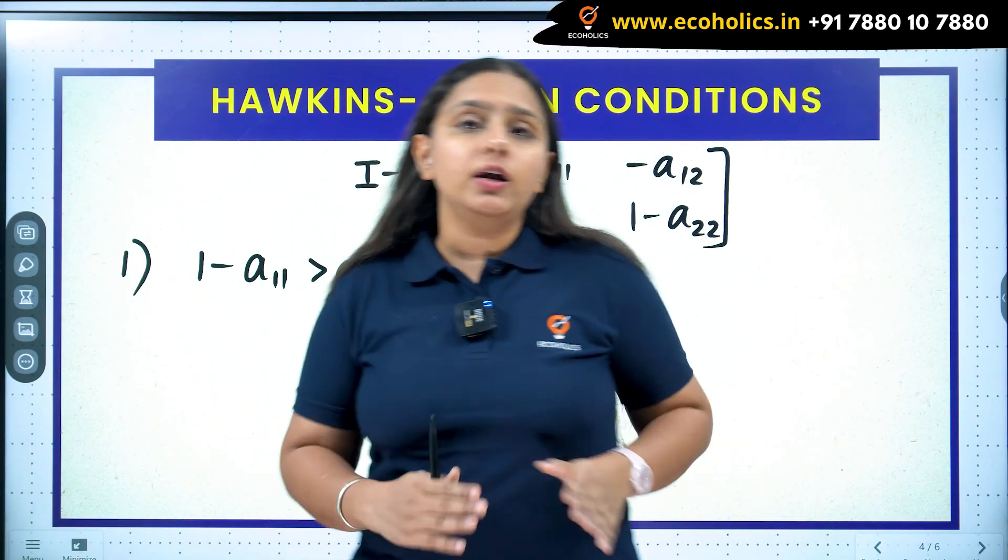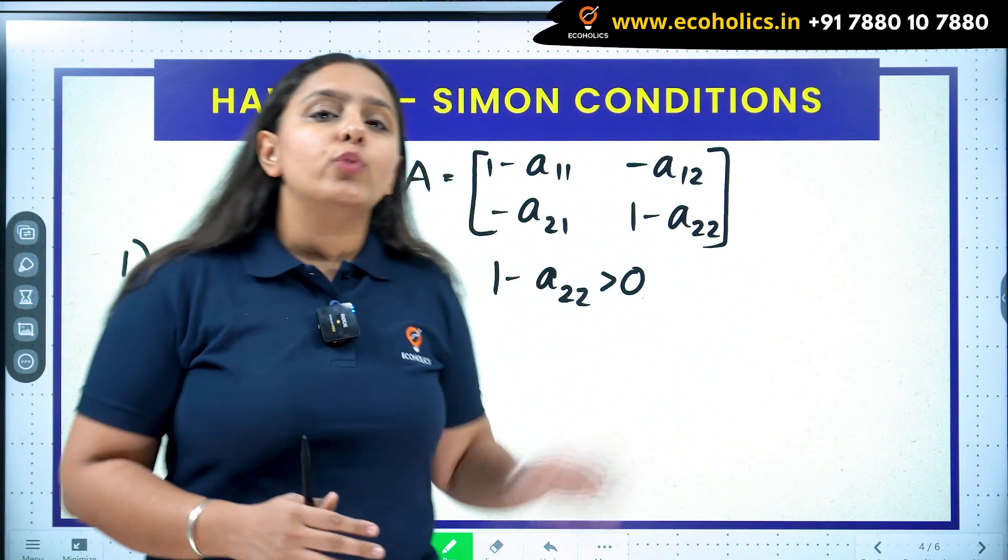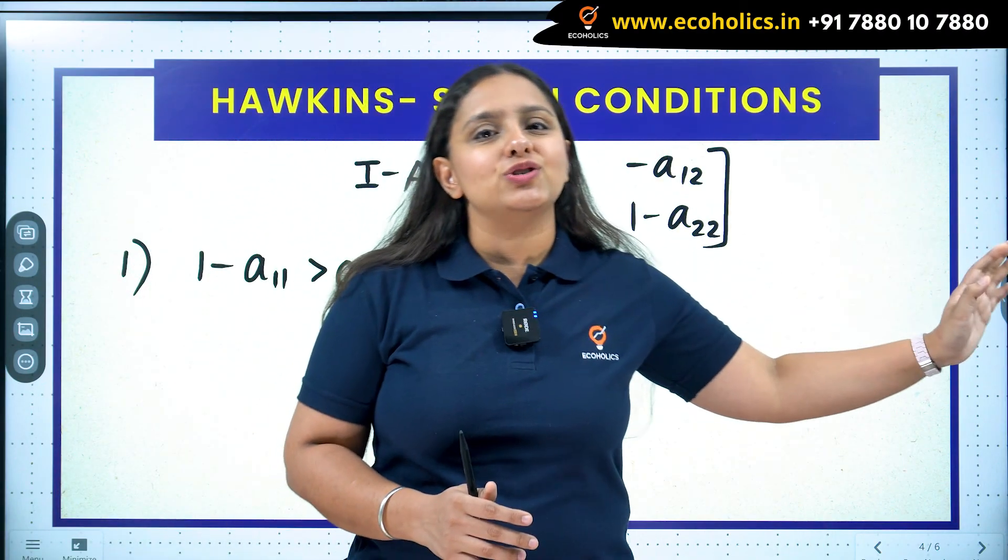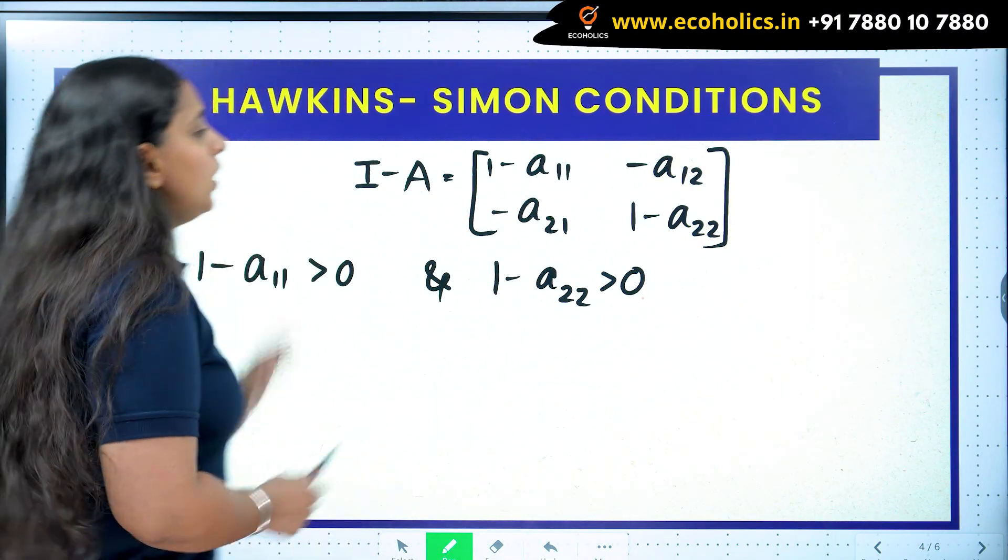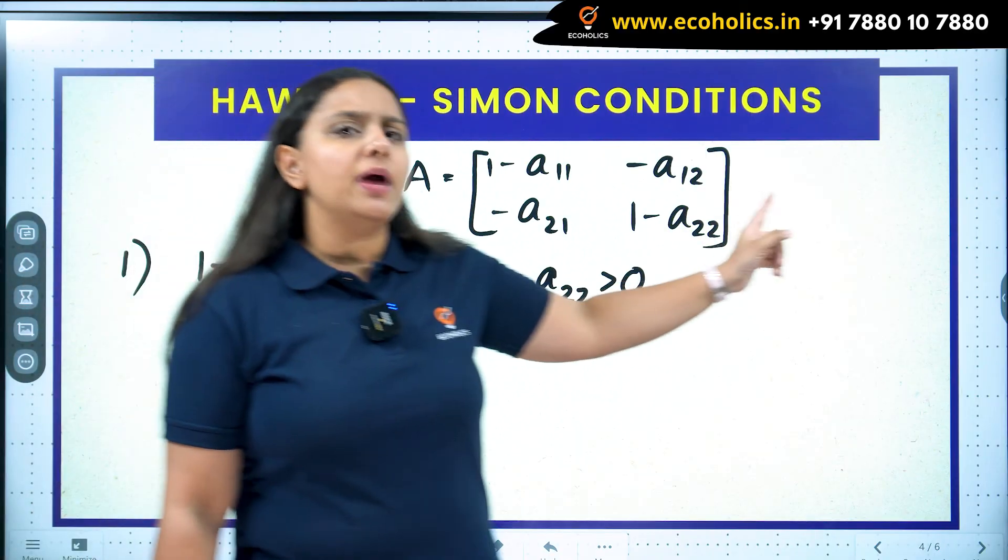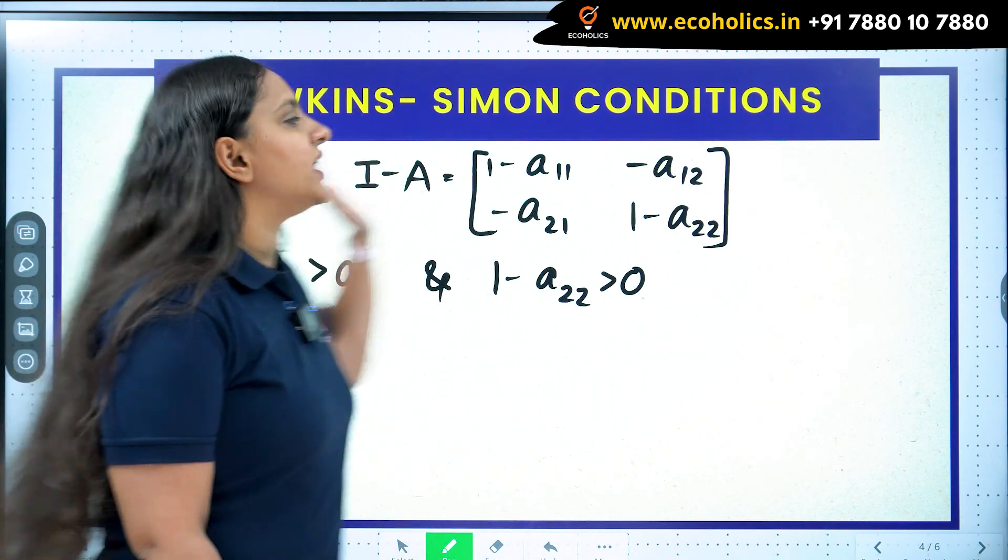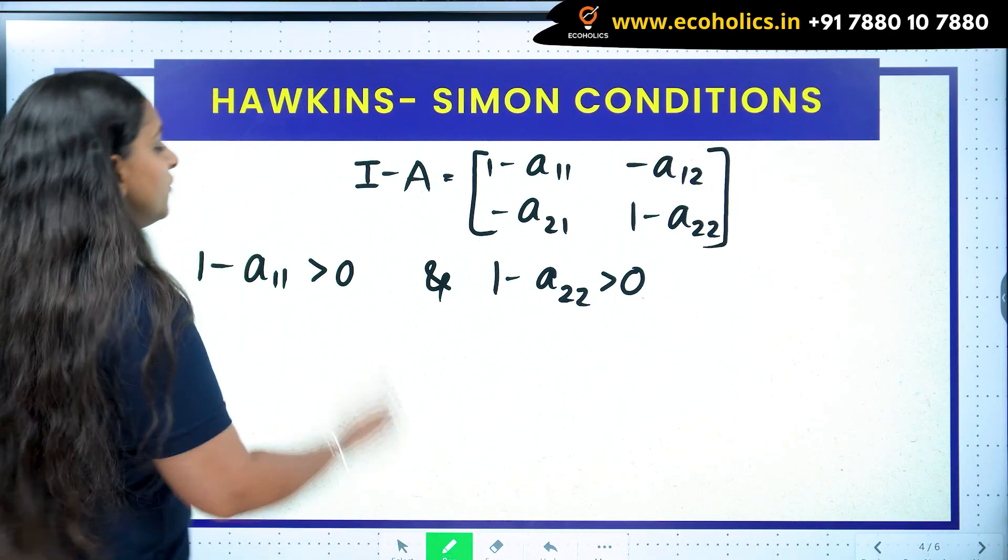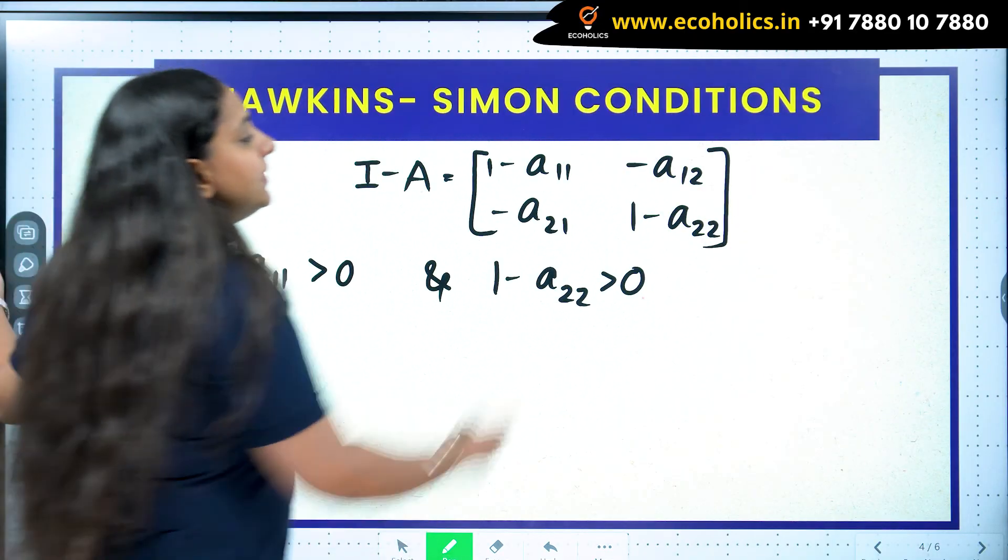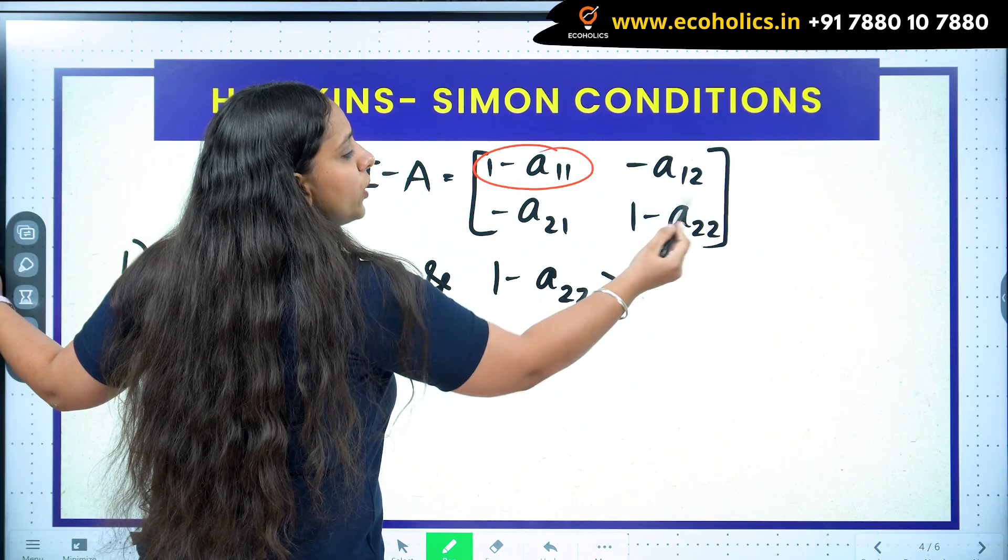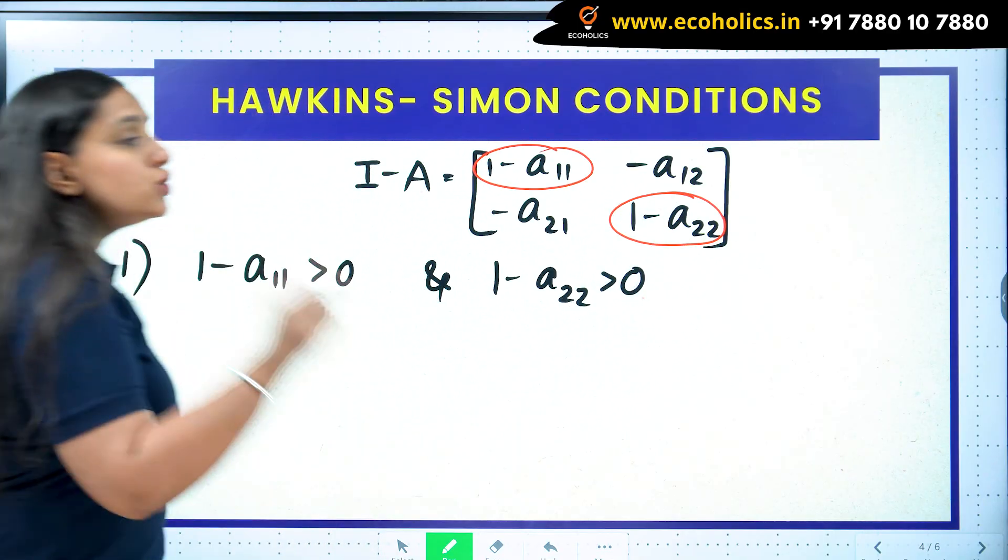Hawkins-Simon conditions are for a two-sector model where we just have two industries which are dependent on each other. We are going to understand those two conditions in today's video. This was the I minus A matrix which we derived in the input-output video, so I have taken it directly.